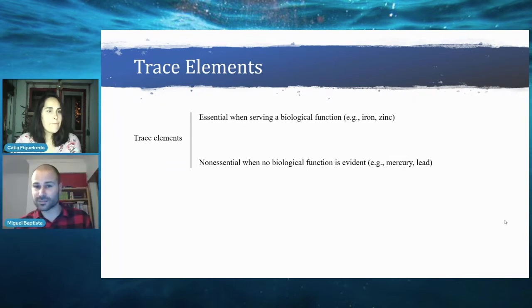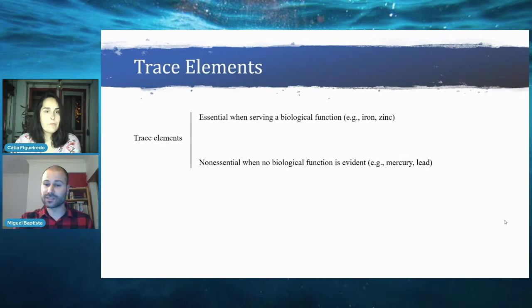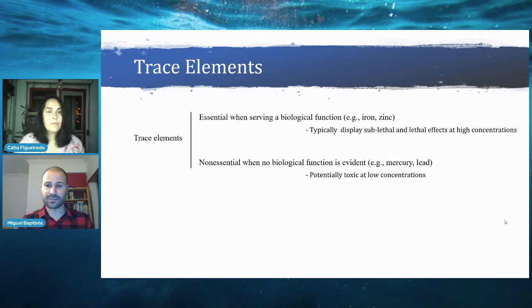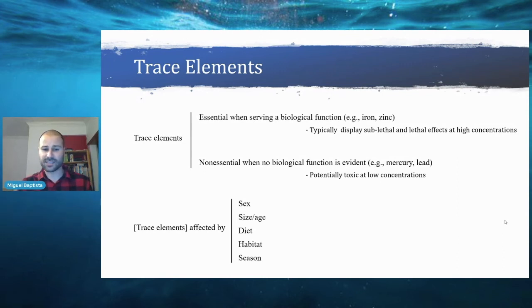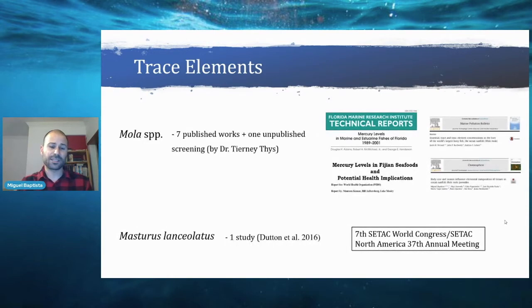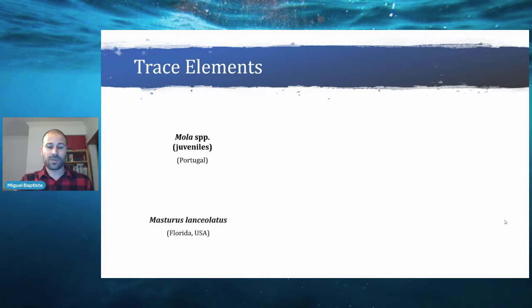Trace elements can be essential when they have a biological function — like iron or zinc — and non-essential when no biological function is evident, like mercury or lead. Either type can have deleterious effects depending on their levels. Concentration of trace elements is affected by sex, size, diet, habitat, or season. To date, eight works have been conducted on trace element concentrations in Mola species, and one on Masturus lanceolatus.